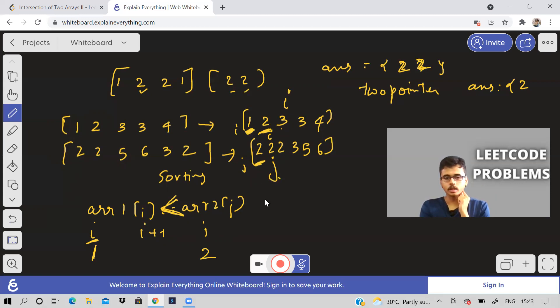Now see, now what happens, array one of I, which is three, and array two of J, which is two, three is greater than two. So now which pointer should I move? I'll move J pointer. Why are we doing this? Because we are hoping that we can get a number which is closer to the bigger of these two numbers so that's to get an intersection. So now I'll move my J.